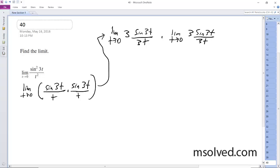We've got this twice, and then finally to be proper, 3 limit as t approaches 0 of sine of 3t over 3t.